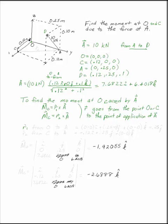So R1 is going to go from point O to point A. R2 is going to go from point C to point A. Remember, to minus from.